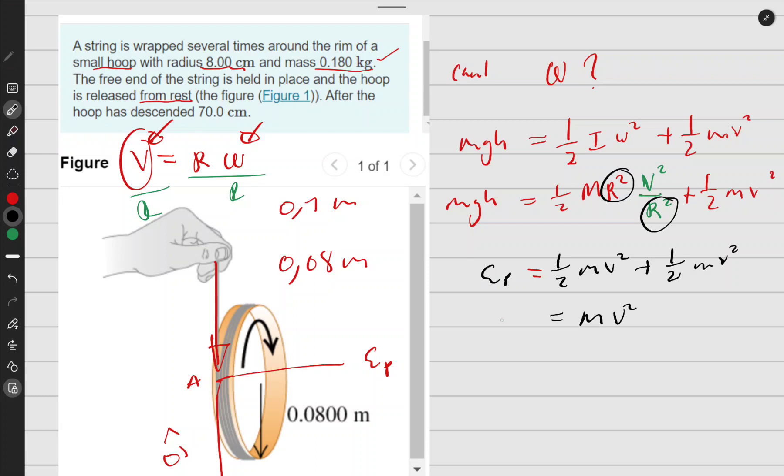On this side, I have potential energy which is mgh. The mass cancels on both sides, so V equals the square root of gh.